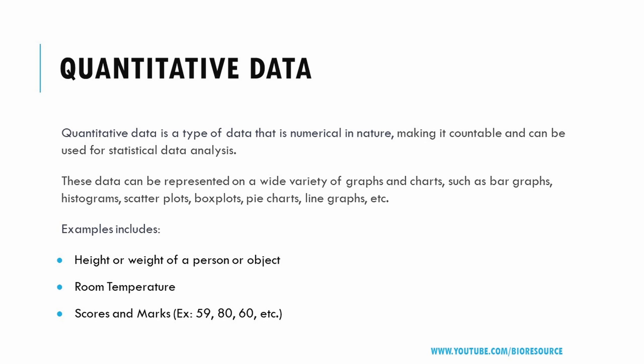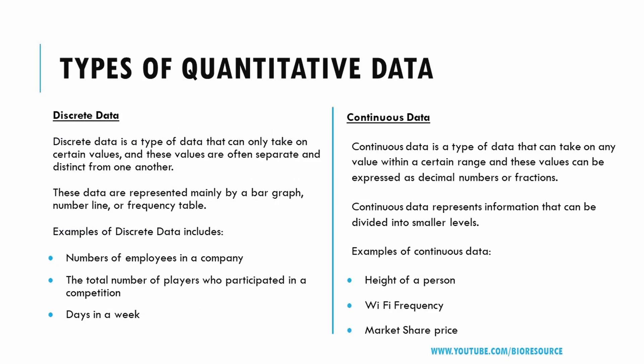Quantitative data can be further classified into two types: discrete data and continuous data. Discrete data is a type of data that can only take on certain values. These values are separate and distinct from one another, are countable, have finite values, and subdivisions are not possible. This data is mainly represented by bar graphs, number lines, or frequency tables.